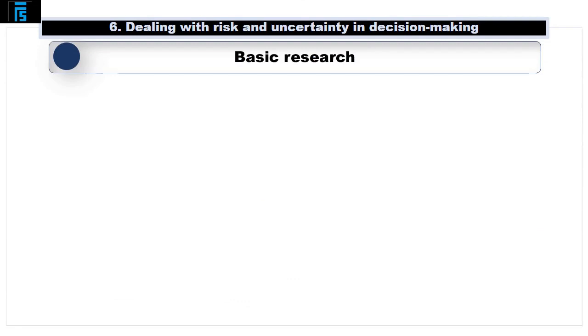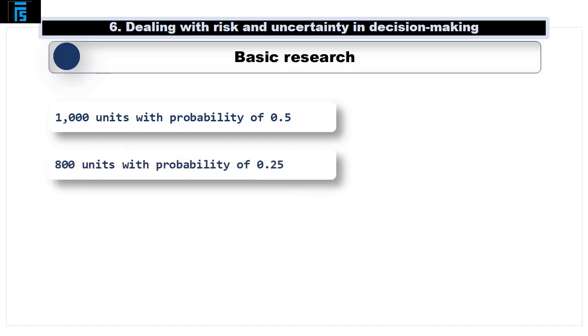Suppose, for example, some basic research showed the following. 1000 units with a probability of 0.5, 800 units with a probability of 0.25, and 1200 units with a probability of 0.25.